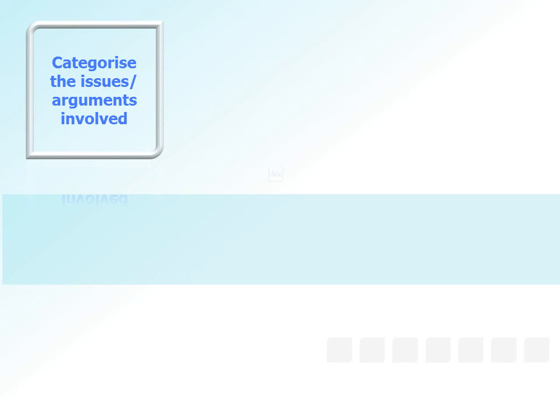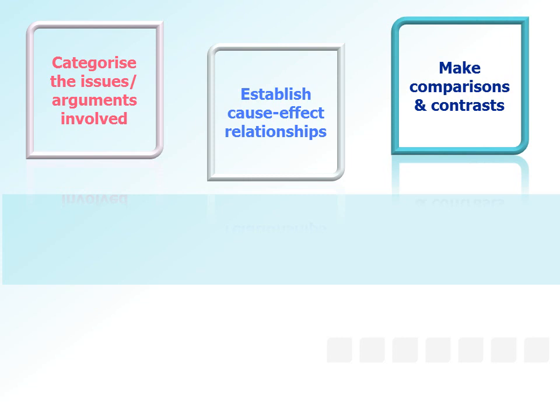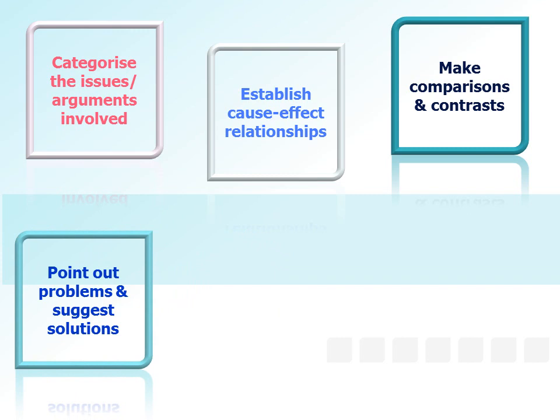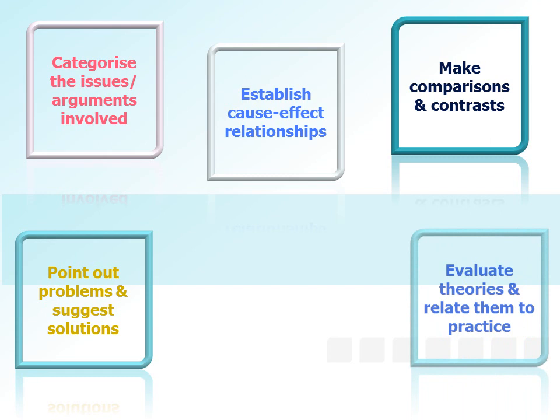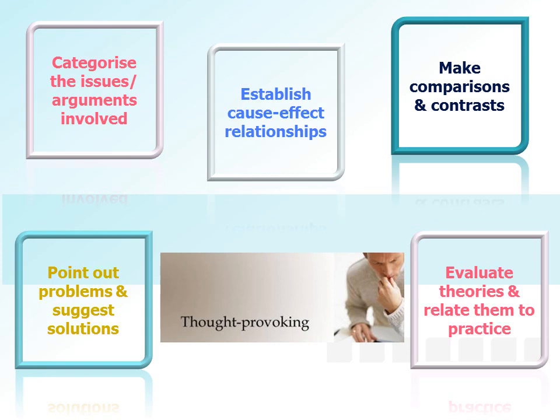Let's recap the key points discussed in this video. For your writing to be critical in the broader sense, it should categorise the issues or arguments involved. It should establish cause and effect relationships, and make comparisons and contrasts. It should also point out problems and suggest solutions. And ultimately, it must evaluate theories and relate them to practice. Your writing must be rational, balanced, well-argued, and based on evidence, examples and extensive reading, using a wide range of literature. It must be insightful and thought-provoking.